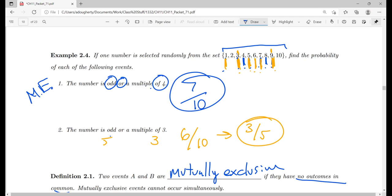No multiple of 4 is odd: 4, 8, 12, 16, 20, 24, 28. You can go on forever. None of those numbers are going to be odd. It is impossible for those two events to occur simultaneously.